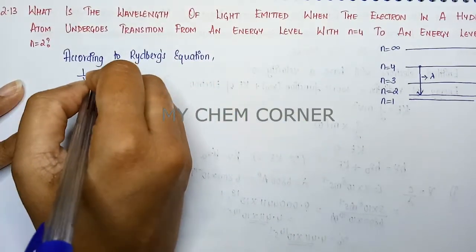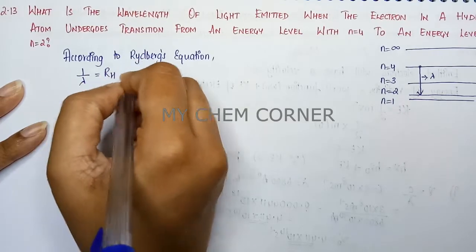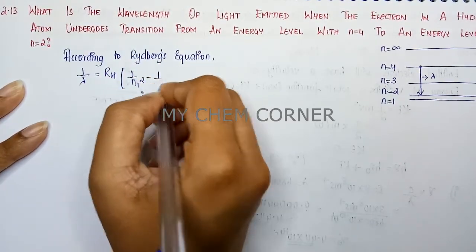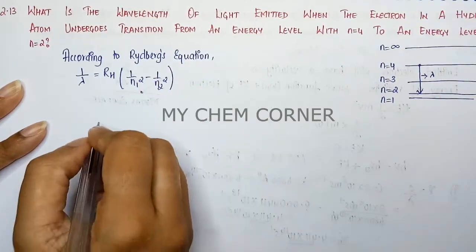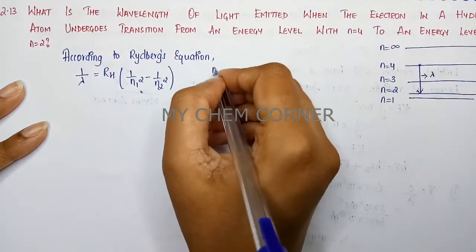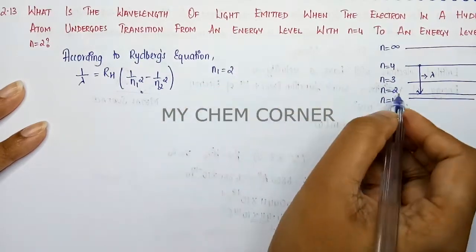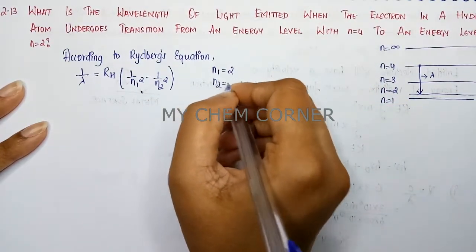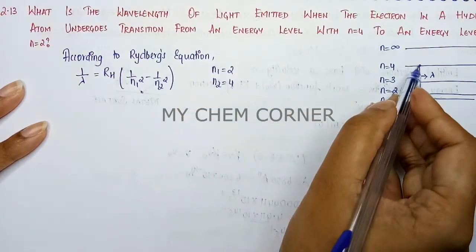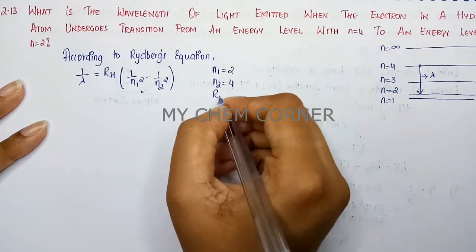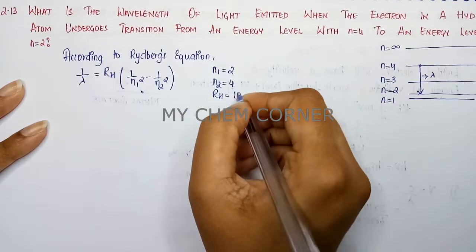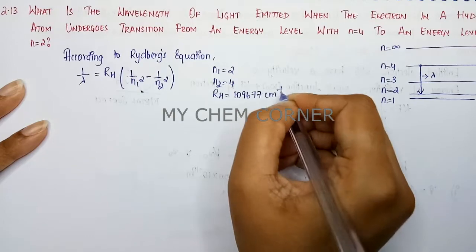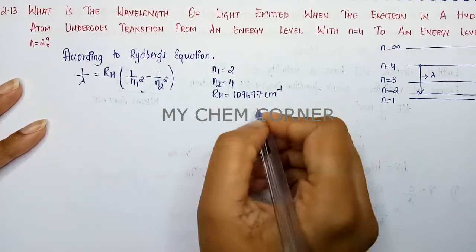1/λ is equal to Rydberg's constant into 1/n1² minus 1/n2². Now n1 here is equal to 2 because it is falling to ground state. n2 is equal to 4 because it is falling from the n=4 state. Rh is equal to 109,677 cm⁻¹. This value is a constant. You should know the value.